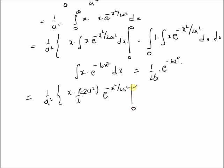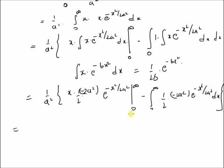With the limits from 0 to infinity, the boundary term — at x = infinity this is 0, and at x = 0 this is also 0 — so that term vanishes. The remaining integral simplifies to the integral from 0 to infinity of e^(−x² / 2a²) dx, with the a² and factors of 2 cancelling out.